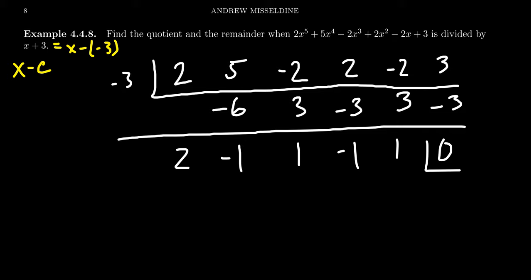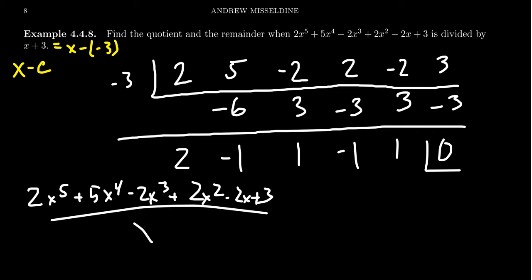And so in this situation, we see our remainder is going to be 0. So if we were to write this thing out, we're going to get 2x to the 5th plus 5x to the 4th minus 2x cubed plus 2x squared minus 2x plus 3. If we divide this by x plus 3...